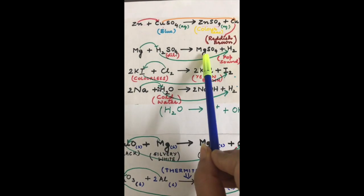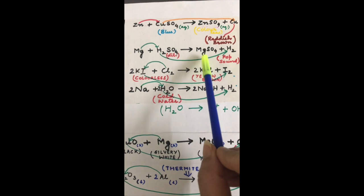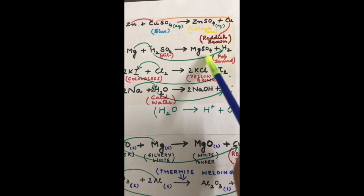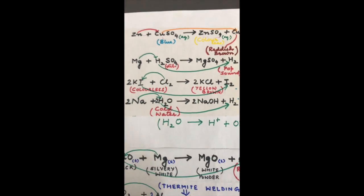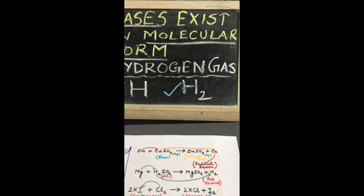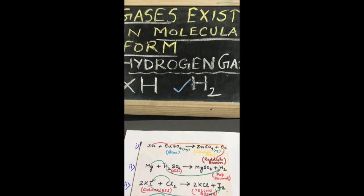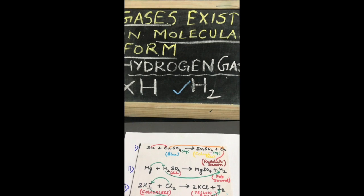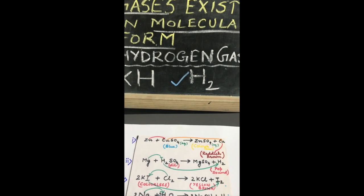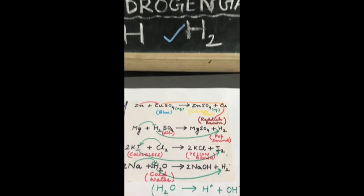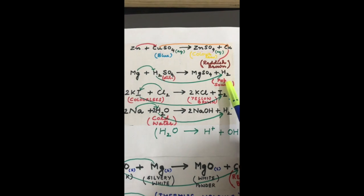The formula MgSO₄ is formed because magnesium is Mg²⁺ and sulfate is SO₄²⁻, so the formula becomes MgSO₄. To understand why we write H₂ and not H: gases always exist in molecular form. Hydrogen gas is never written as H — it is always written as H₂. Please remember and note this in your notebooks: hydrogen is always written as H₂. So whenever we write any molecular equation, it is written as H₂.